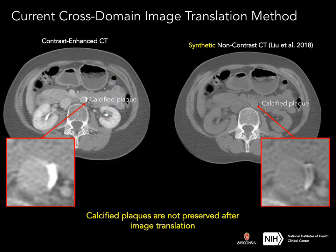In this slide, we show the image translation results by Niu's model. On the left, we show the original contrast-enhanced CT, and on the right, we show the converted non-contrast CT. If we look into the plaque structure, we can see that the plaque is corrupted after image translation, while other large internal structures such as the kidney are preserved well.